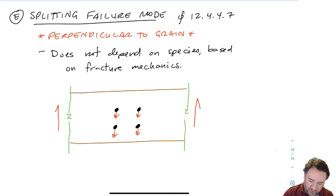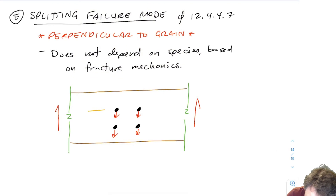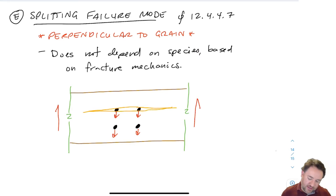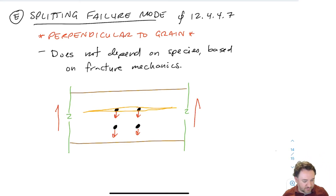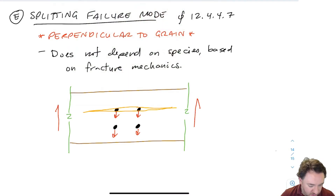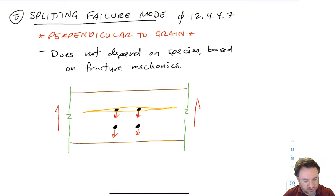It's a bit messy with the straws; if I draw it, it'll make more sense. If we pull down on those bolts, we're basically going to form a crack here because we're splitting apart the fibers. That crack will have some certain length, and if we pull enough, it's going to split the piece of wood crossways — which is very bad. So we need to look at our unloaded edge and our loaded edge, and use those distances to calculate our splitting strength.